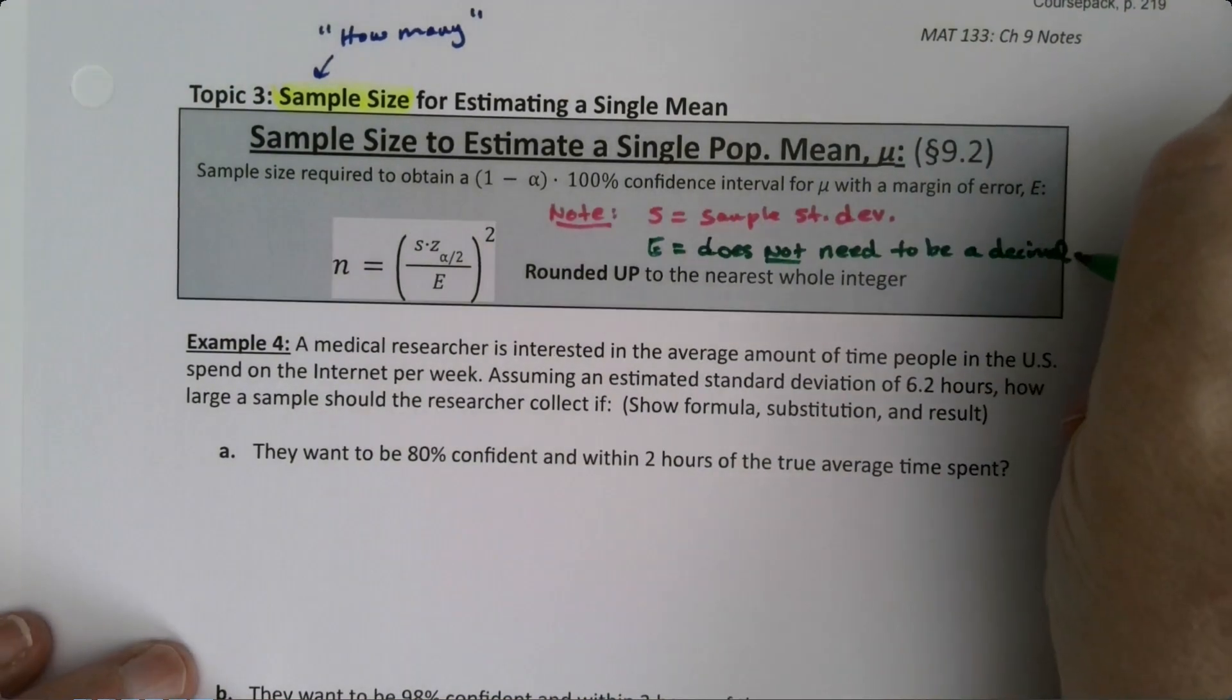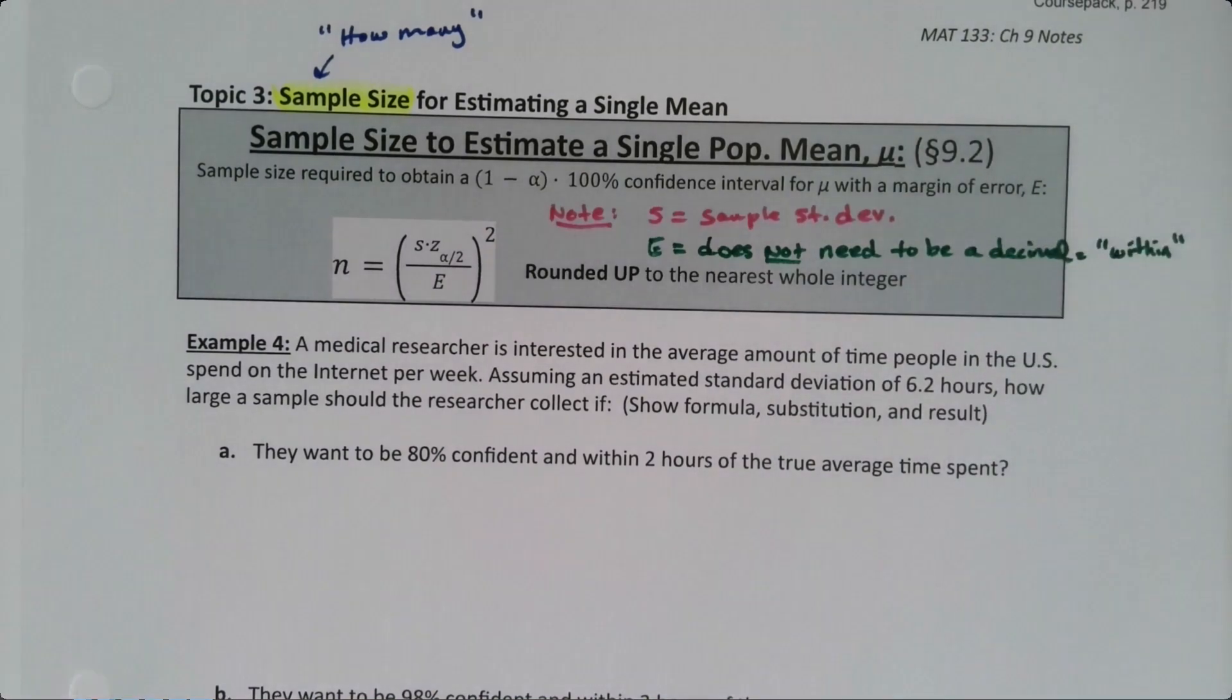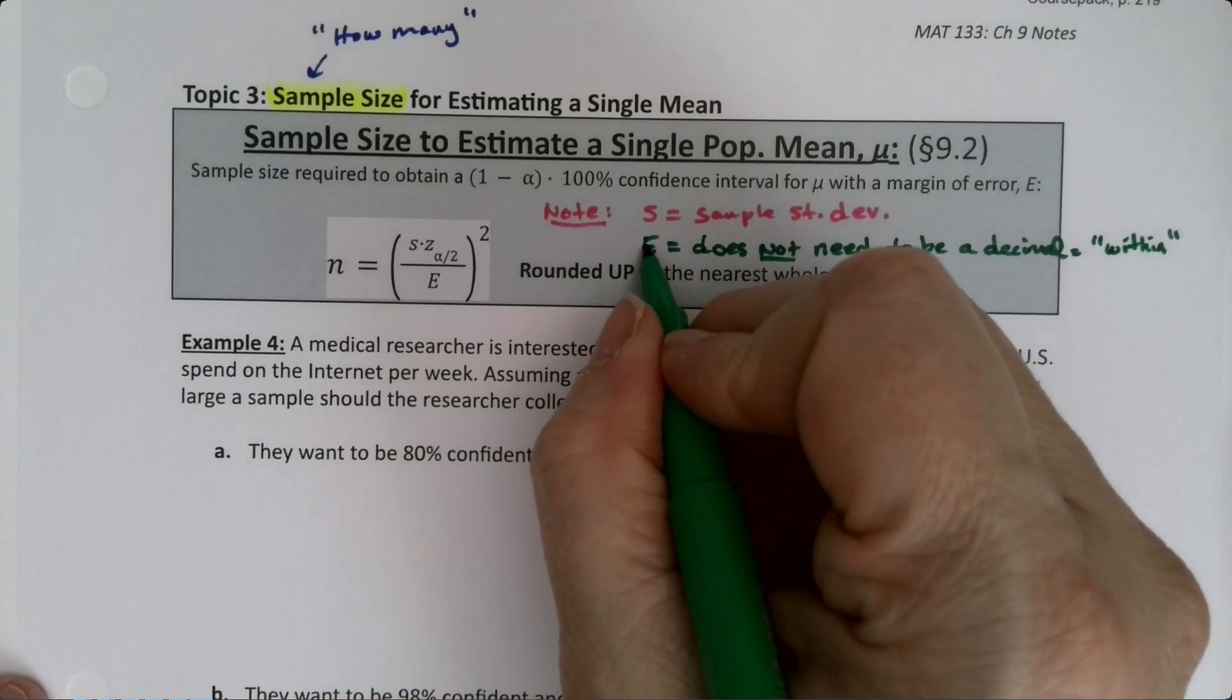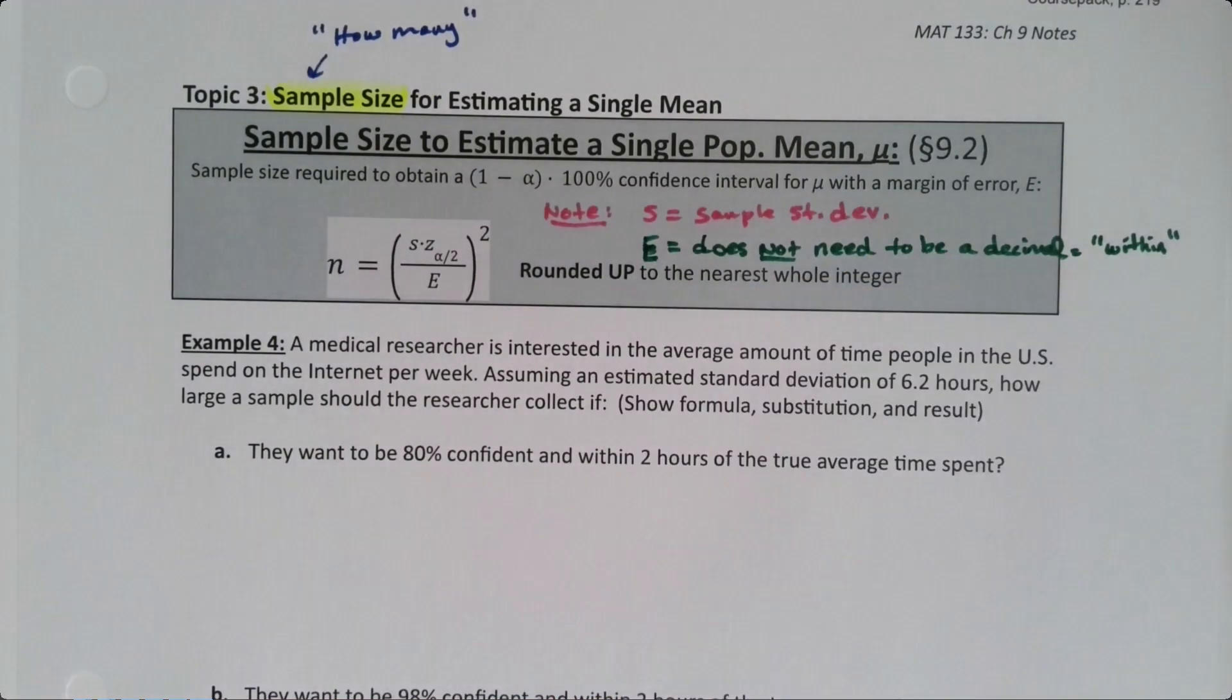It can be a decimal, but it doesn't have to be. It's just whatever they give it to you as, that's what you use. Again, look for within. The word within often is the error. That's an E for error. There we go. Okay, so let's look at a problem.